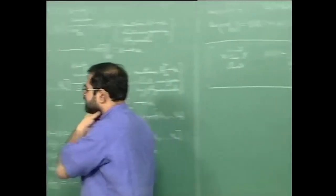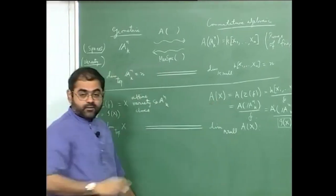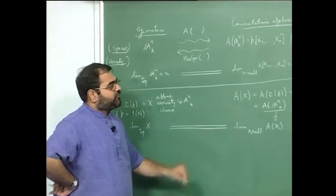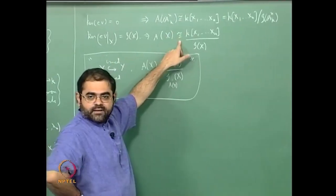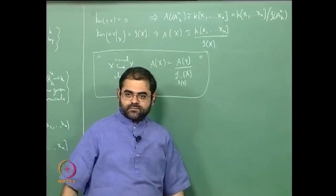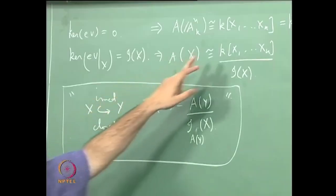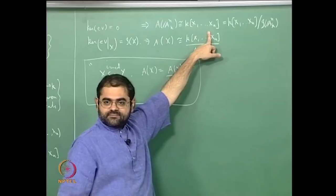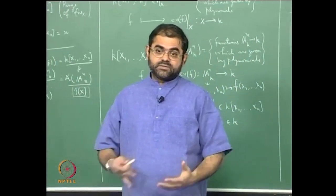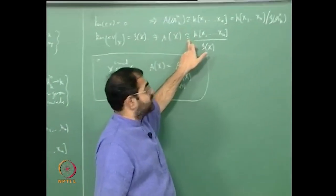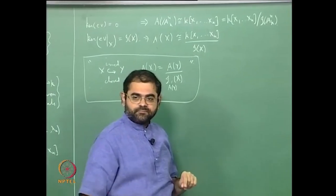That tells you why it is correct to define the ring of functions for an affine variety like this. Of course, we will not always worry about writing 'isomorphic to' every time. By abuse of notation we will simply write equals — but what that equality precisely means is an isomorphism, because when you write the ring they are actually polynomials, but to think of them as functions you must evaluate those polynomials.